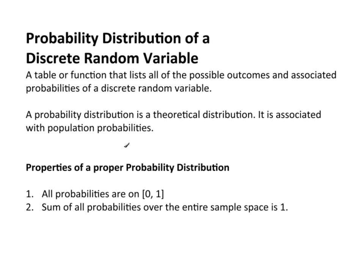Now let's talk about the idea of a probability distribution of a discrete random variable. We know what a discrete random variable is, so let's talk about the idea of the distribution. By definition, the probability distribution for a discrete random variable is really nothing more than a table or a function that lists all the possible outcomes and associated probabilities of a discrete random variable.